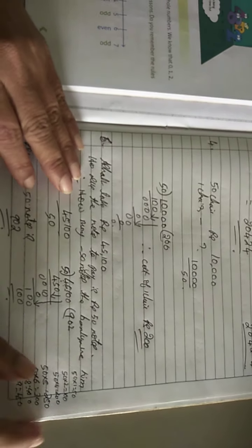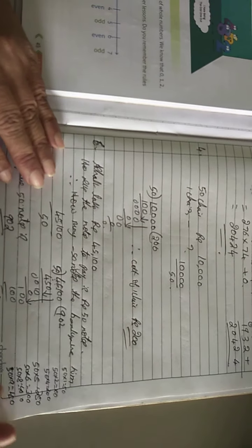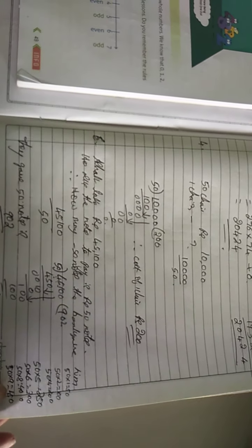Okay children, the remaining sums you see yourself and do in the rough notebook. Thank you. Next class I will start the new chapter: whole numbers.